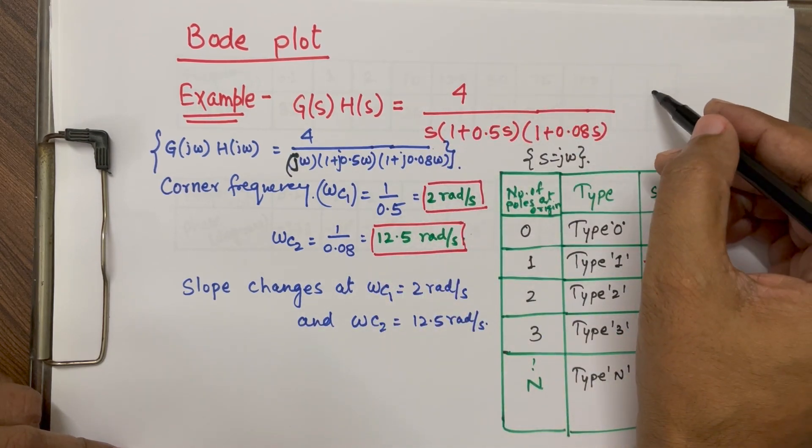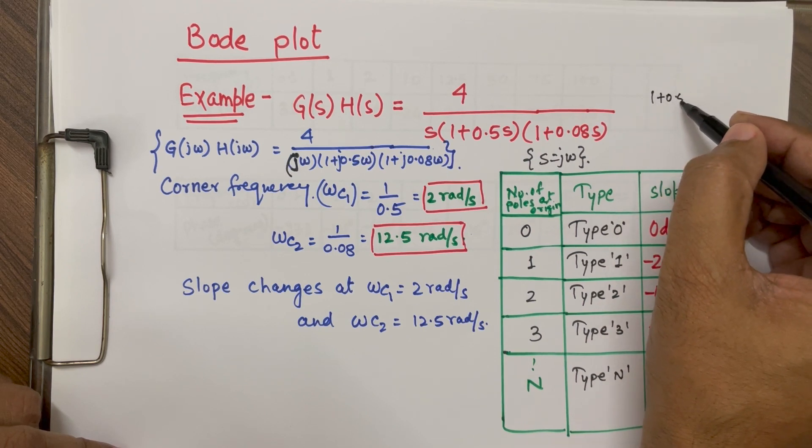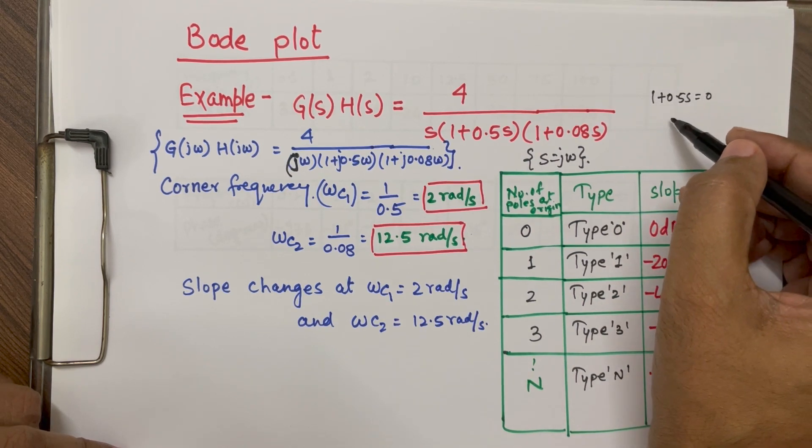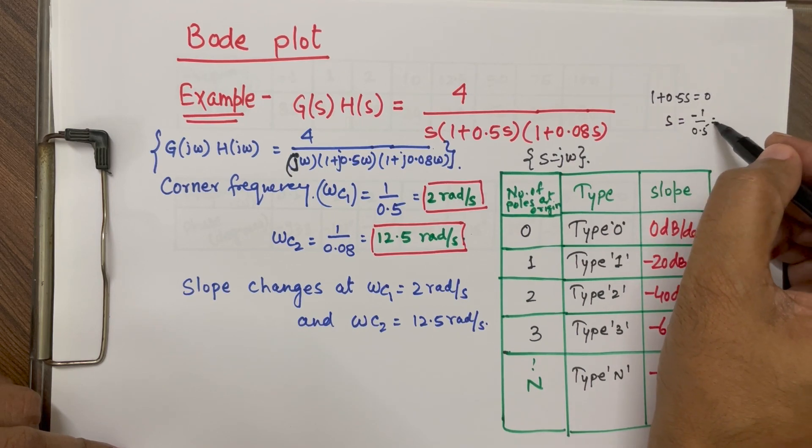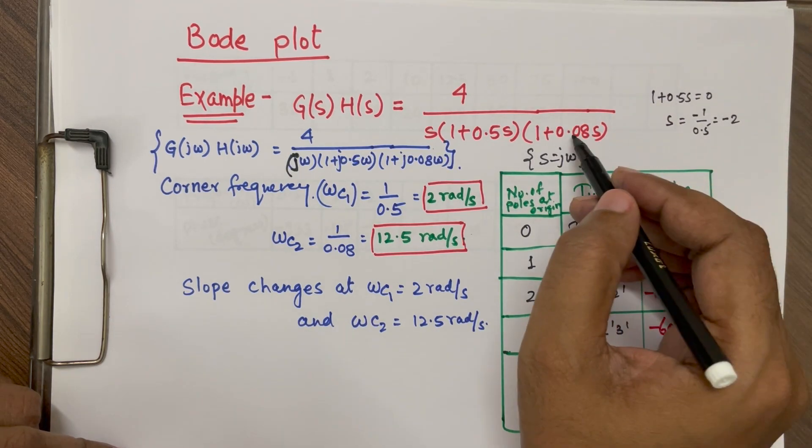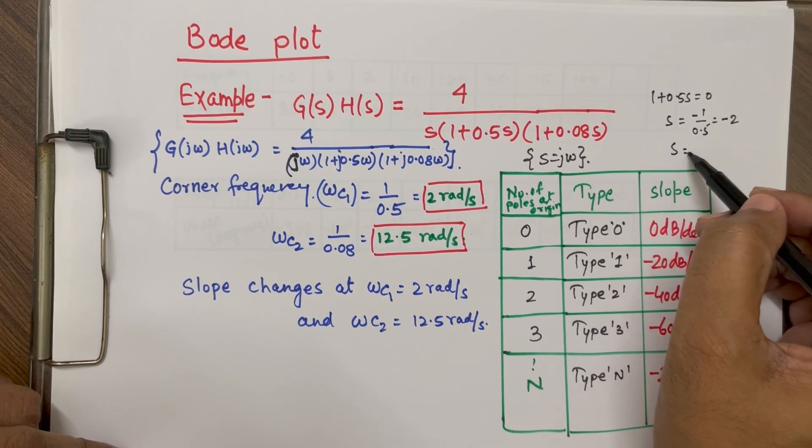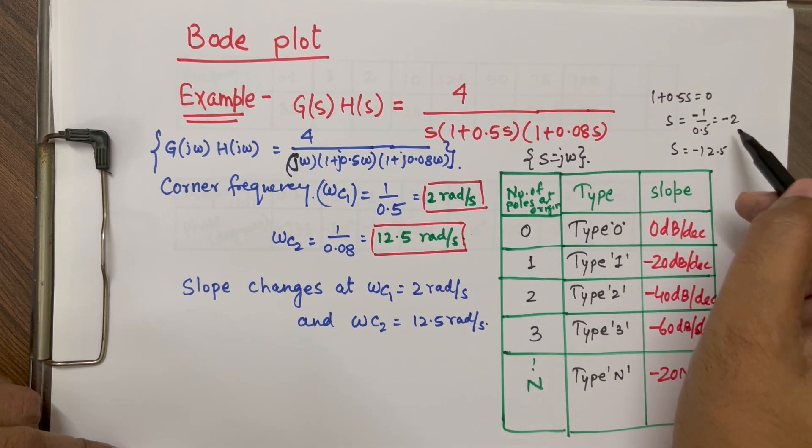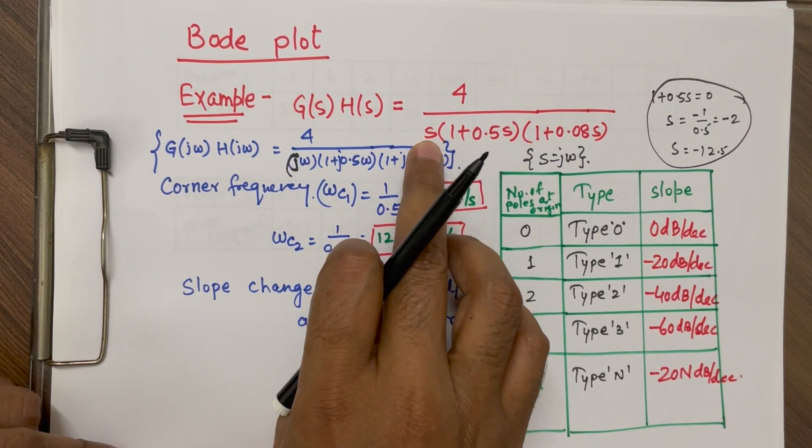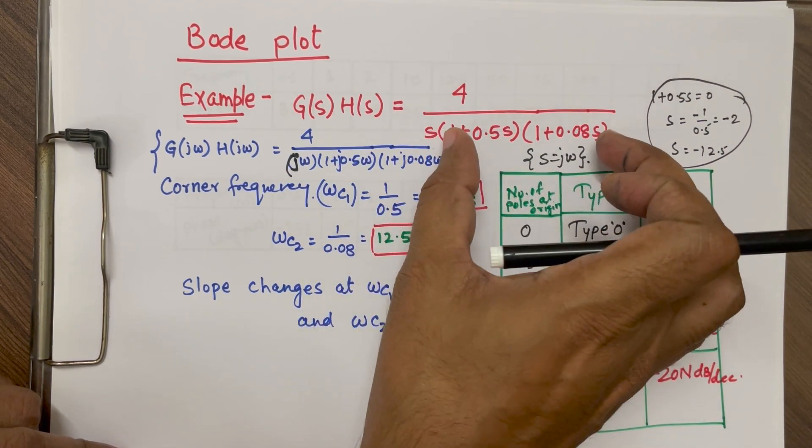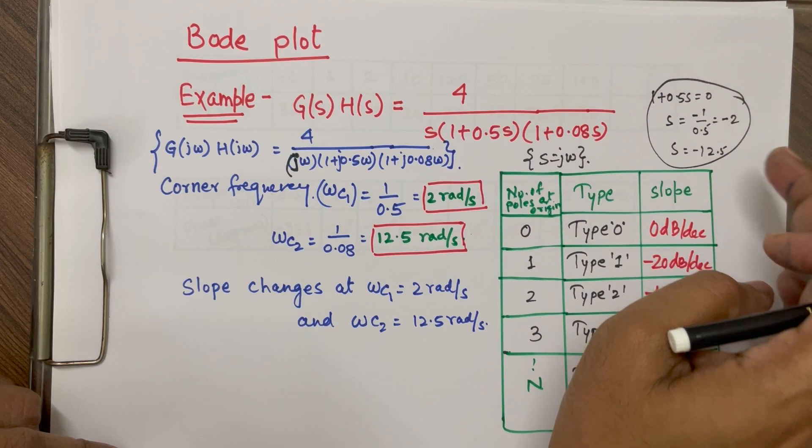If I want to know where are other poles, we can just equate this with 0. So basically we have poles at minus 2. Similarly here we can find out where is the pole, it is minus 12.5. So there is one pole at 0, that is origin and other two poles are at minus 2 and minus 12.5.